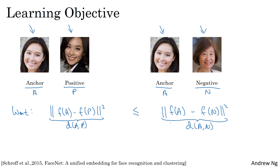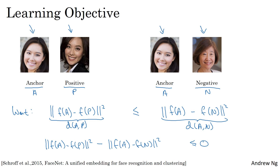If we move the term from the right side of this equation to the left side, what you end up with is ||f(A) - f(P)||² minus ||f(A) - f(N)||², and you want this to be less than or equal to zero. But one trivial way to make sure this is satisfied is to just learn everything equals zero. If f always outputs zero, then this is zero minus zero, which is zero. By saying f of any image equals a vector of all zeros, you can trivially satisfy this equation.